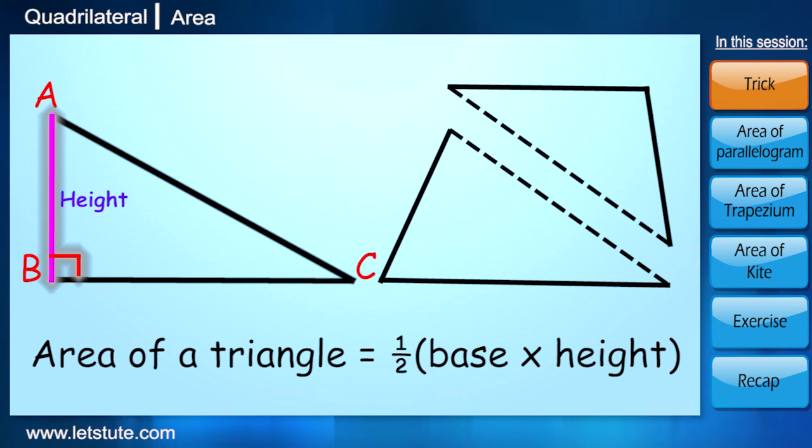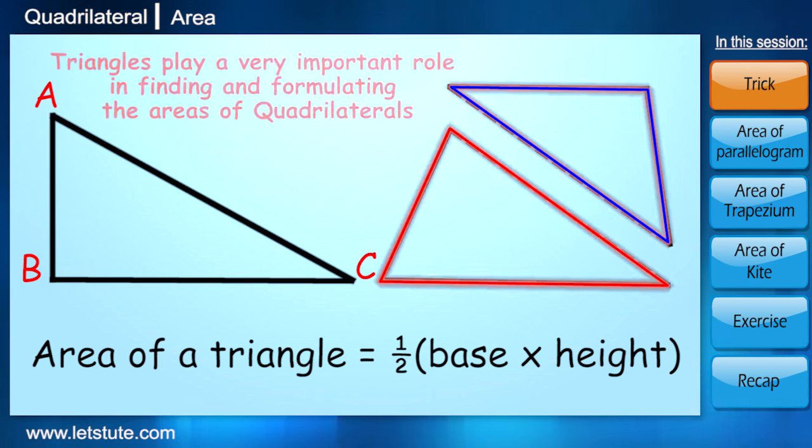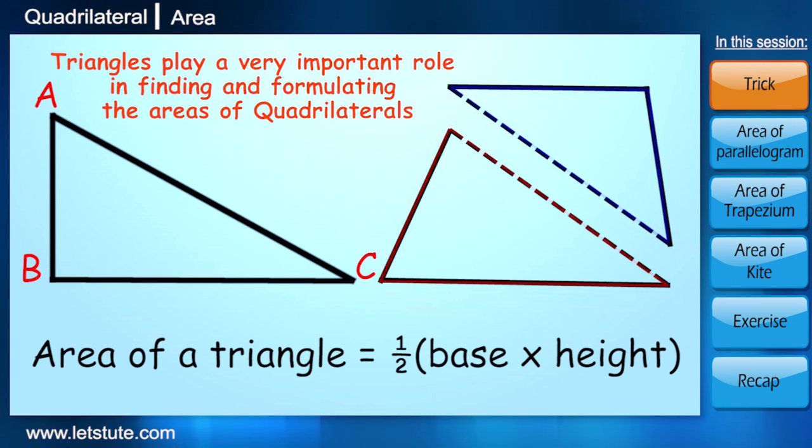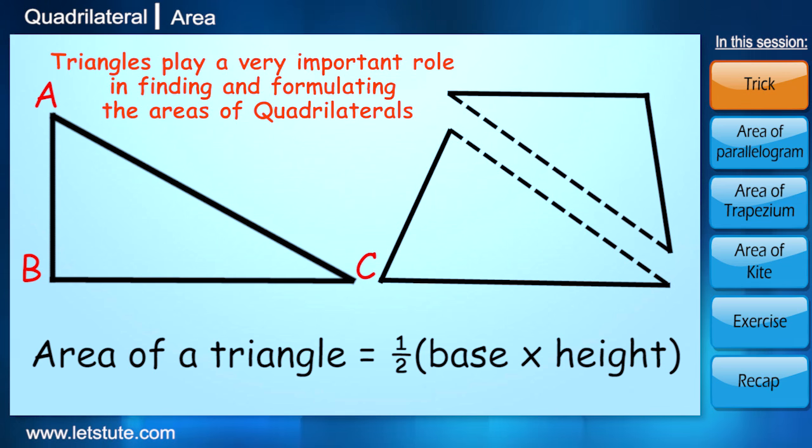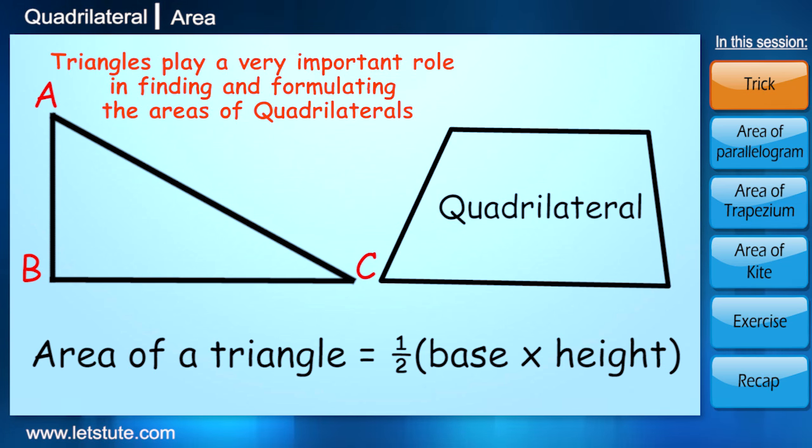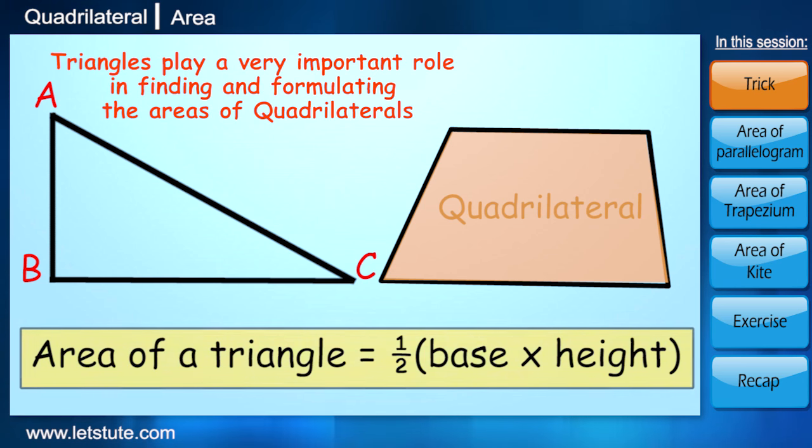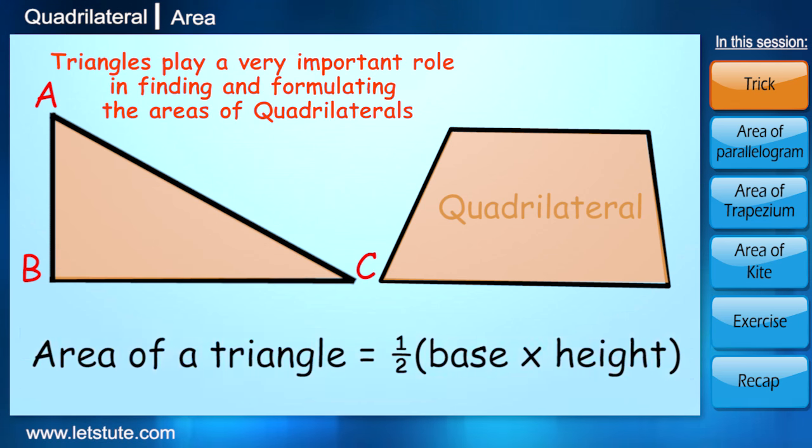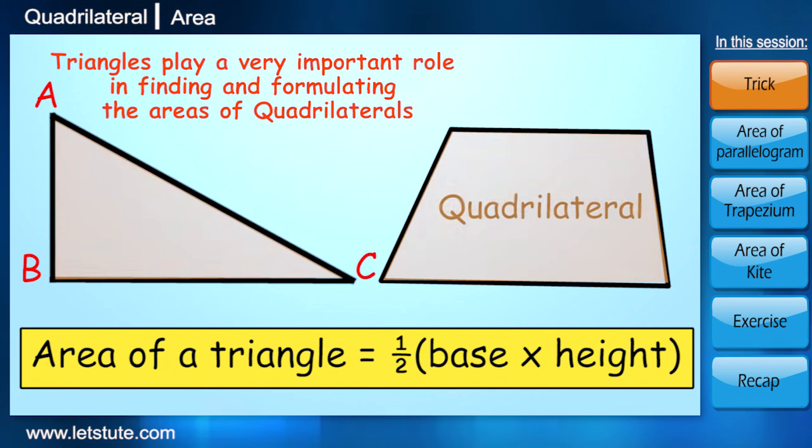Triangles play a very important role in finding and formulating the areas of quadrilaterals. Seems strange, right? Something which is rarely seen. Let's see how it works. We'll be finding areas of all types of quadrilaterals by only using the area of a triangle. So what do we have to keep in mind? Half times base into height.